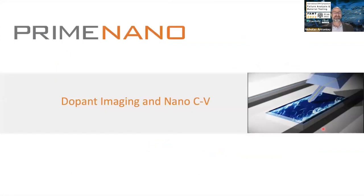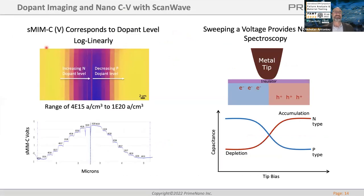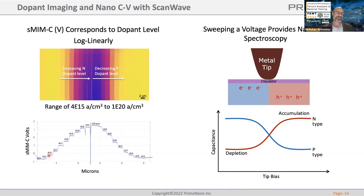Now into dopant imaging and nano-CV. This is an implant reference sample we provide in our quantification product. There are 10 dopant levels of n-type in a staircase from about 1E15 up to 1E20, and adjacent to that are 10 p-type doped regions in a staircase from about 1E20 down to 4E15. We use this for quantifying dopant levels. You can see the capacitance response to different dopant levels — our system outputs volts for both resistance and capacitance.